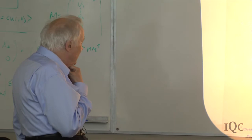The orthodox or decoherence interpretation is the view many working physicists arrive at independently when they start wondering about the interpretation of quantum mechanics—hence the hundreds of papers in the literature rediscovering this point of view as if it were new.